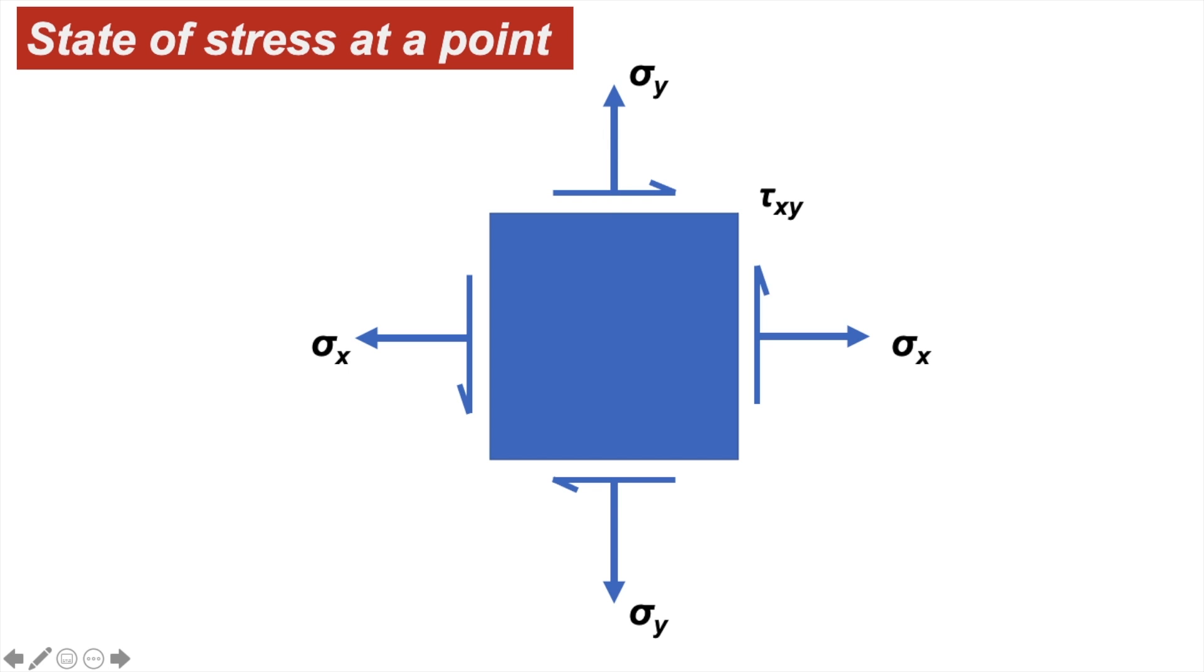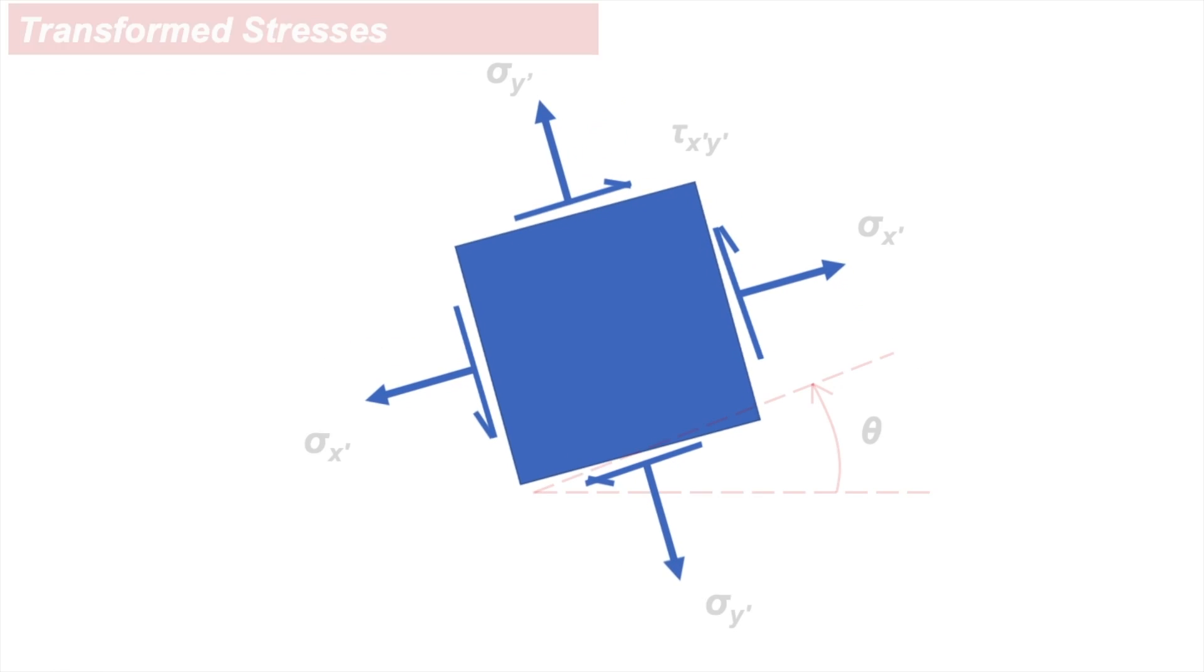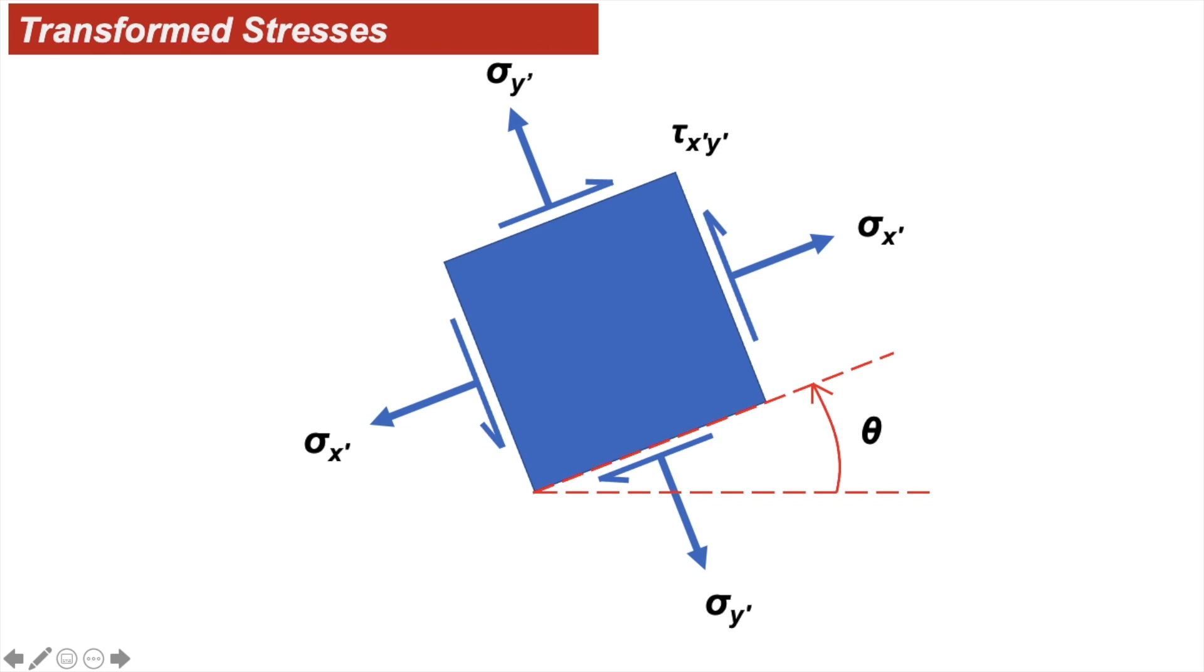Now suppose that I want to rotate this element and I need to calculate the corresponding transformed stresses. This is where we use the Mohr circle method. When I transpose my element, the stresses are also changed from sigma x to sigma x prime, sigma y to sigma y prime, and tau xy to tau xy prime, and we have rotated the element by theta.